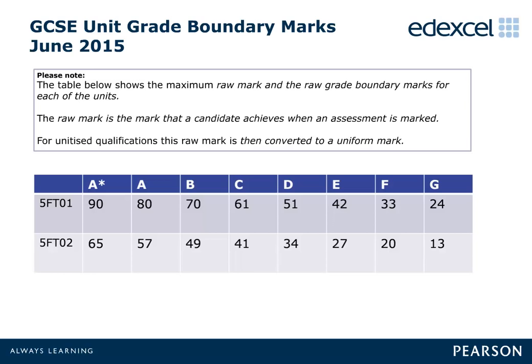The table shows the maximum raw mark and the raw grade boundary marks for each of the units. The raw mark is the mark that a candidate achieves when an assessment is marked. For unitised qualifications, this raw mark is then converted to a uniform mark, otherwise known as UMS.